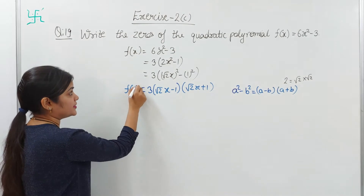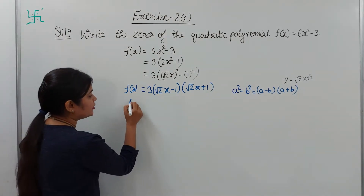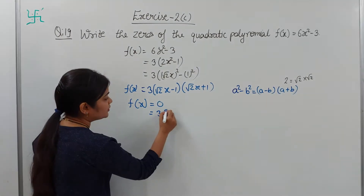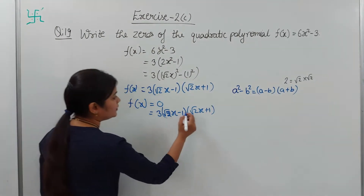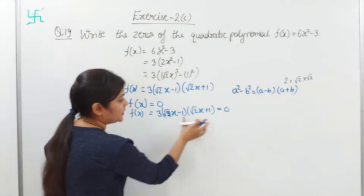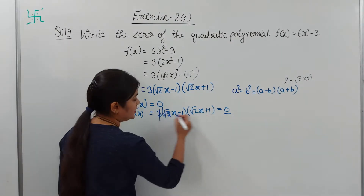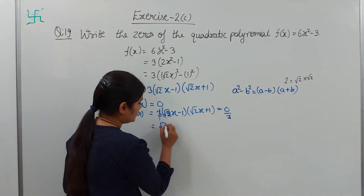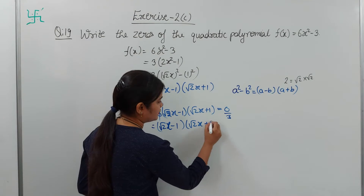So fx factors to: 3 into (root 2·x minus 1)(root 2·x plus 1). For zeros of the polynomial, fx equals zero. So 3 into (root 2·x minus 1)(root 2·x plus 1) equals zero. Since dividing zero by 3 still gives zero, we have: (root 2·x minus 1)(root 2·x plus 1) equals zero.